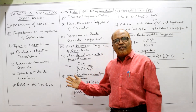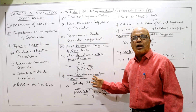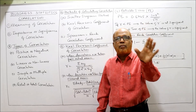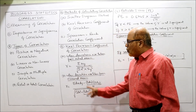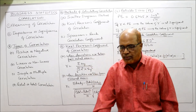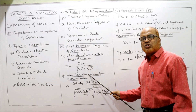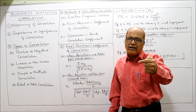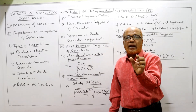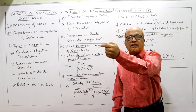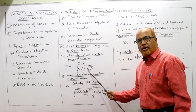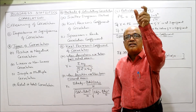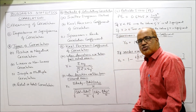The Karl Pearson correlation coefficient is calculated using a formula that takes into account mean values and standard deviation. One formula is applied when deviations are taken from the actual mean — this is used when the mean value is a whole number. If the actual mean is a fraction, then we take the assumed mean, take deviations from the assumed mean, and apply a different formula to get Karl Pearson's correlation coefficient.